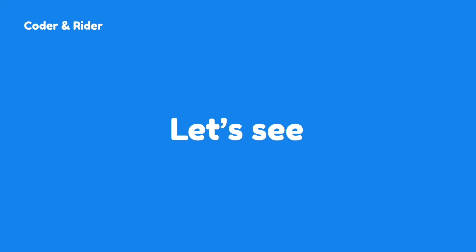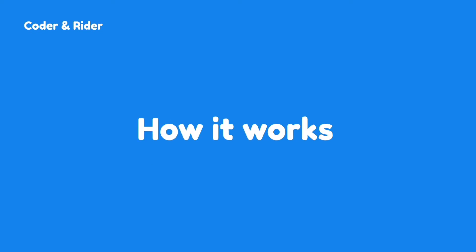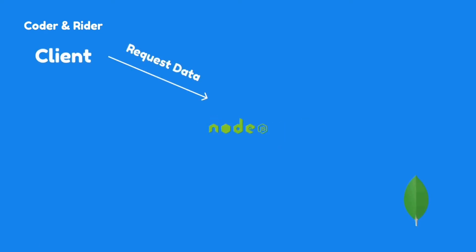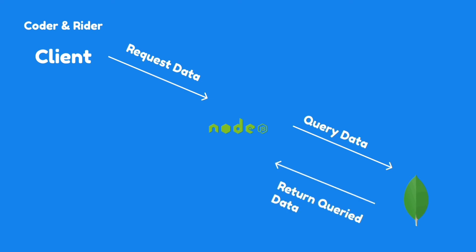Let's see how it works. First, the request will pass from the client to the Node.js server. Then the Node.js server queries the data from MongoDB. Then MongoDB returns the data to the server, and the server returns the data to the client app.